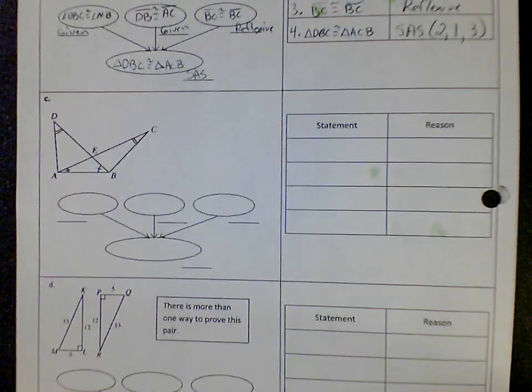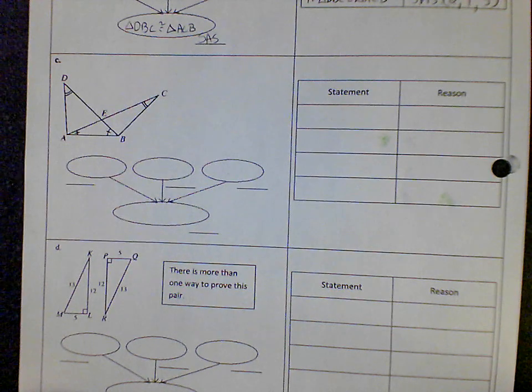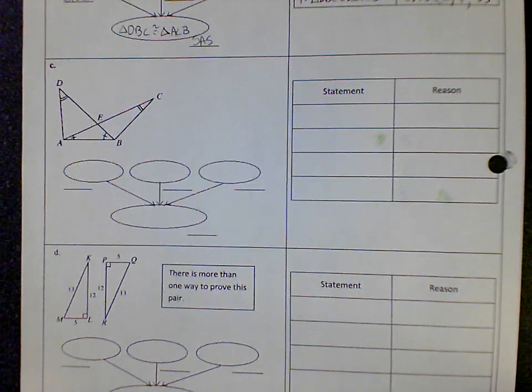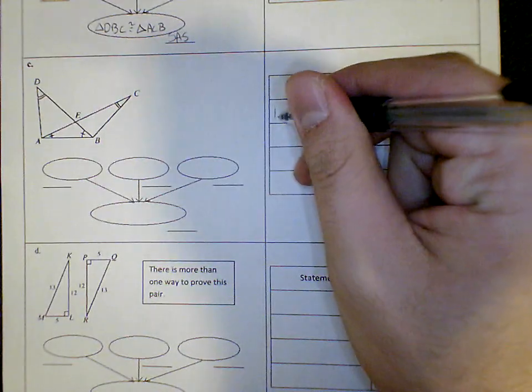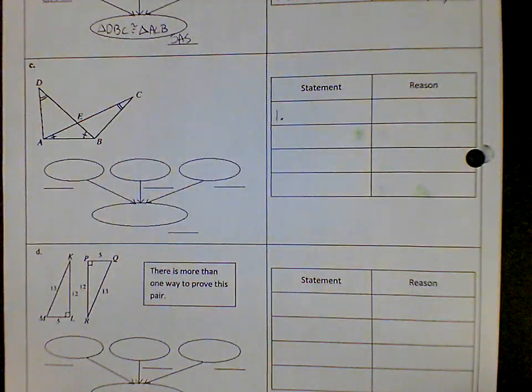All right, on question C, I'm going to challenge you guys to not do the flowchart proof. Let's just see if we can do the two column proof. So statement number one, once again, we're going to start out with our givens.